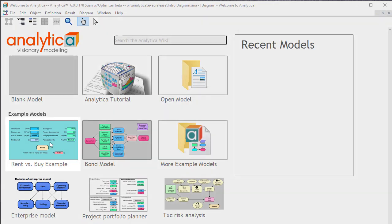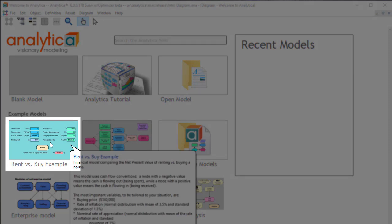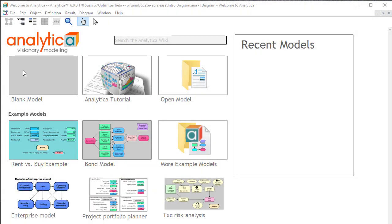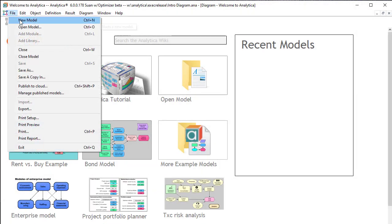We're going to use this model, so you can open it by simply clicking here. However, since I want you to learn how to access models that don't appear on the Intro screen, I'll open it this time by going to the File menu and selecting Open Model.